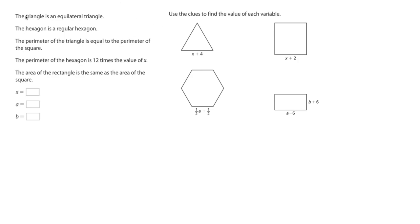So the problem states, or it gives us information. It says that the triangle is an equilateral triangle, meaning that all the sides are exactly the same. And it tells us that the hexagon is a regular hexagon. And regular is a word used in geometry to describe that all the sides are the same also. And sometimes these lines are drawn to indicate that the sides are the same.